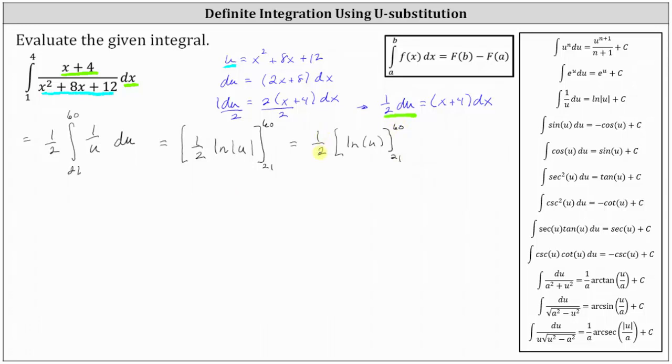And now we need to determine 1 half times the difference of big F of 60 and big F of 21, which gives us 1 half times the quantity natural log 60 minus natural log 21.